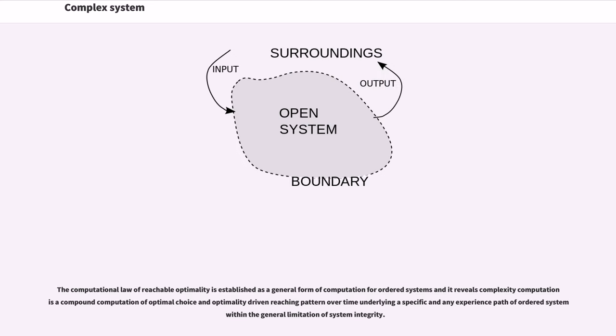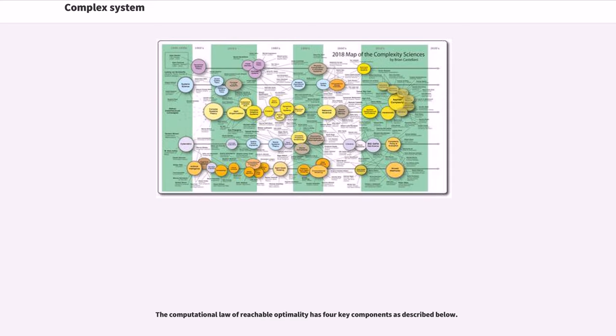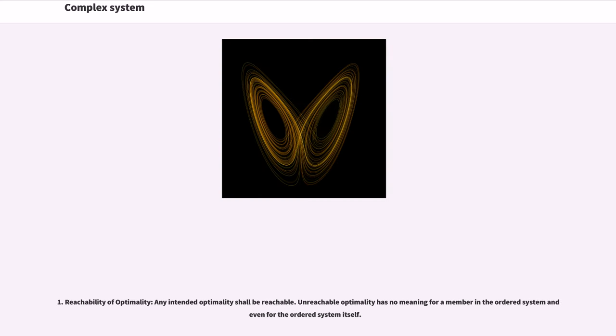The computational law of reachable optimality is established as a general form of computation for ordered systems and it reveals complexity computation as a compound computation of optimal choice and optimality-driven reaching pattern over time underlying a specific and any experience path of ordered system within the general limitation of system integrity. The computational law of reachable optimality has four key components as described below. 1. Reachability of optimality: any intended optimality shall be reachable. Unreachable optimality has no meaning for a member in the ordered system and even for the ordered system itself.